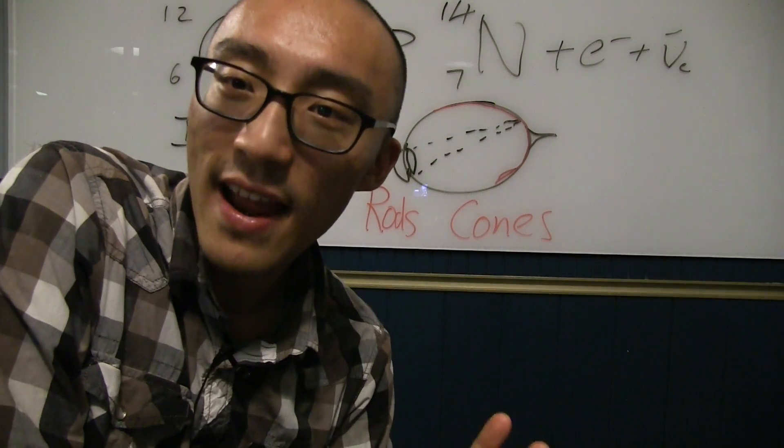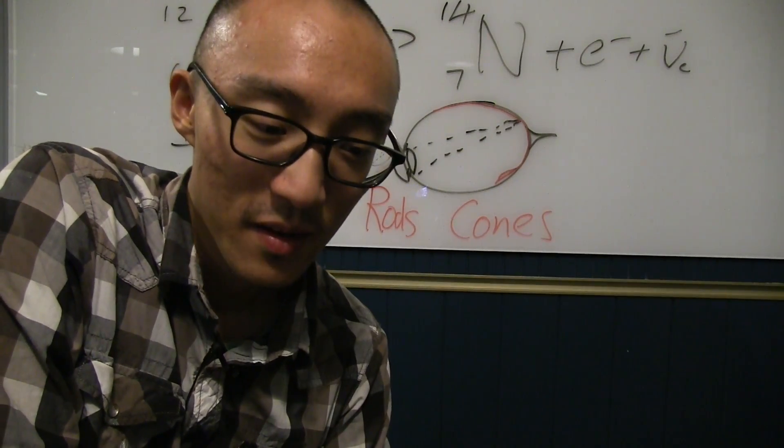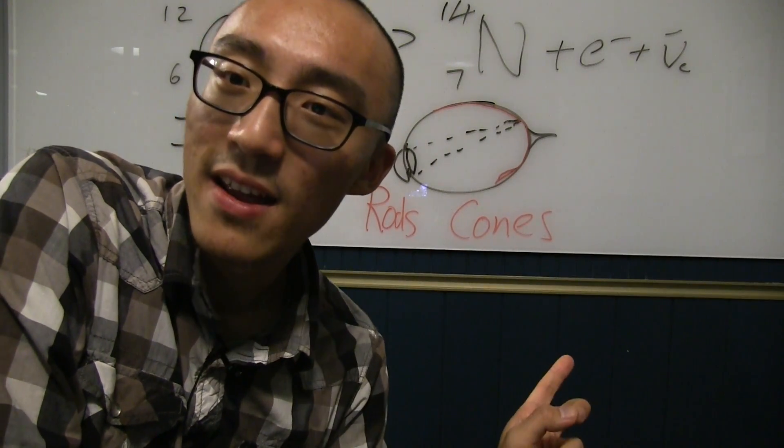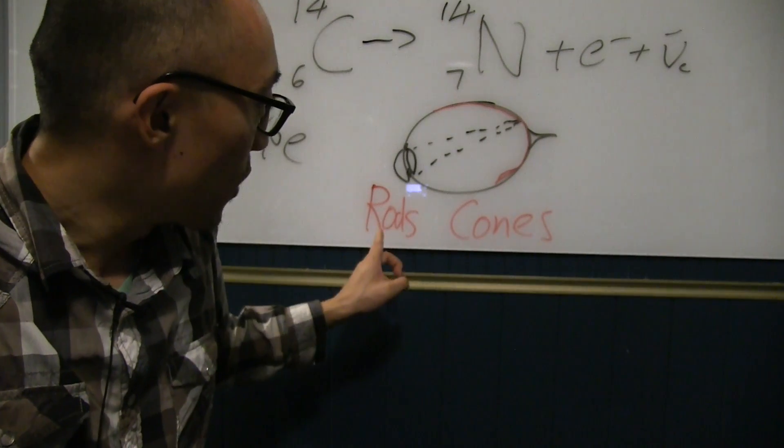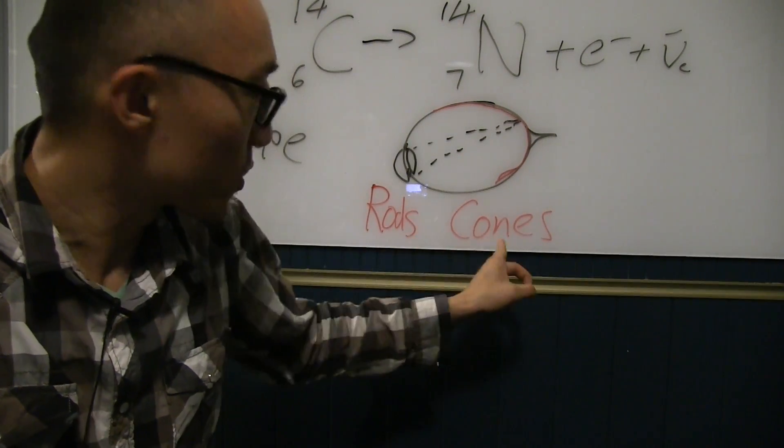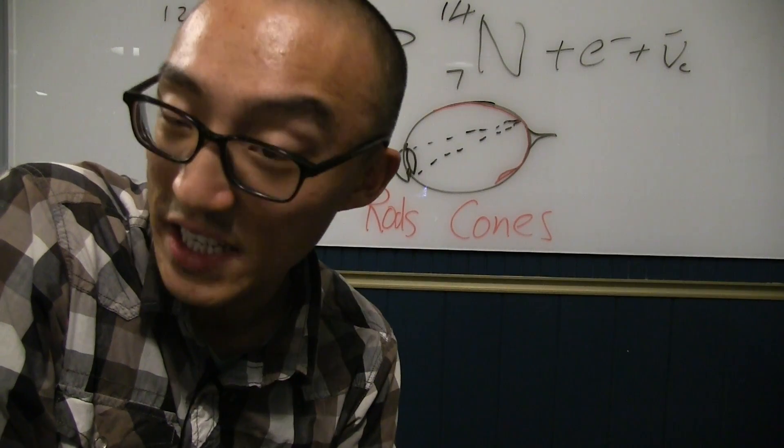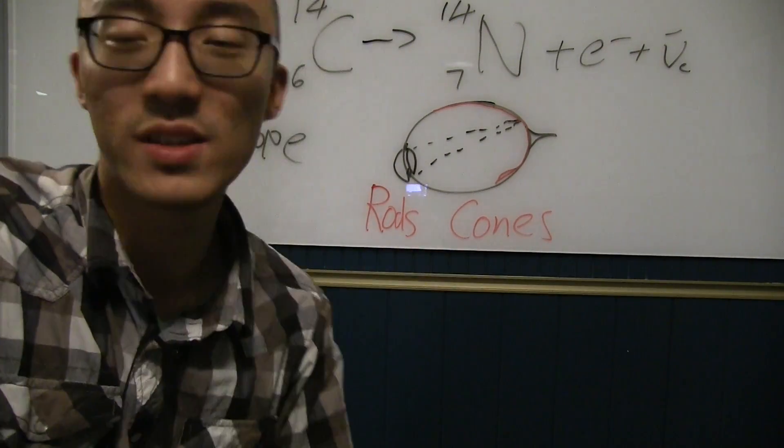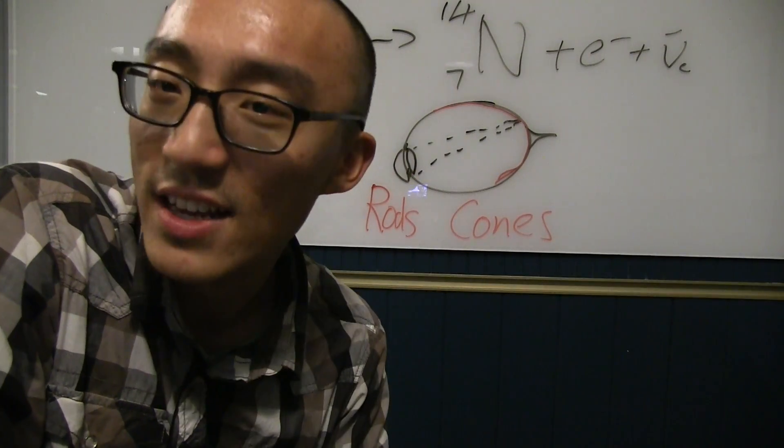Anyways, on every single test in biology or neuroscience, if you're studying the eye, they're going to ask, which one of these receptors are responsible for seeing color? Is it rods or is it cones? Take a wild guess. Which one?